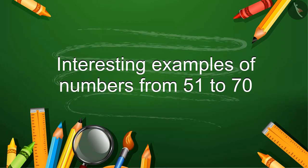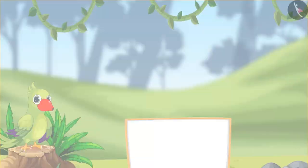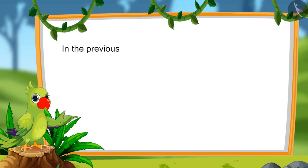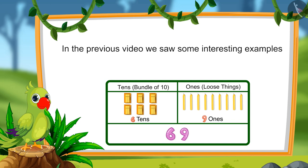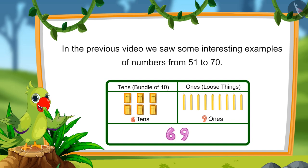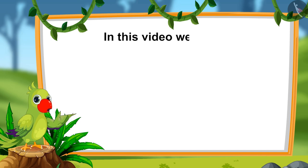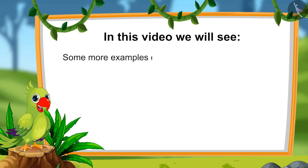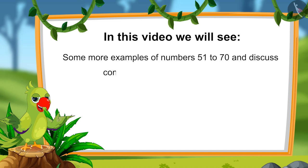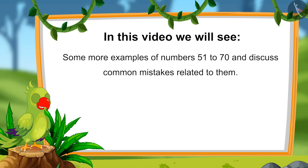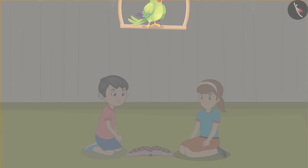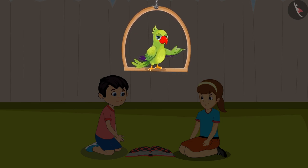Hello children! In the previous video we saw some interesting examples of numbers from 51 to 70. In this video we will see some more examples related to those numbers. We will also discuss about the common mistakes that we should avoid. Today Chotu and Arti are playing a game together.